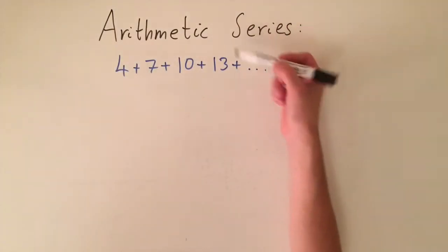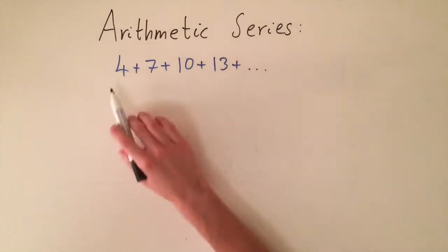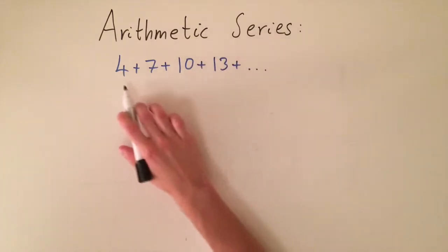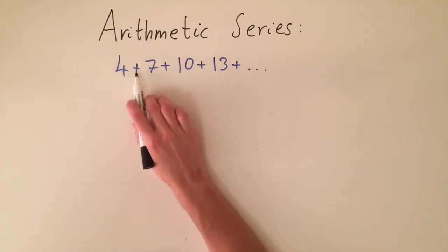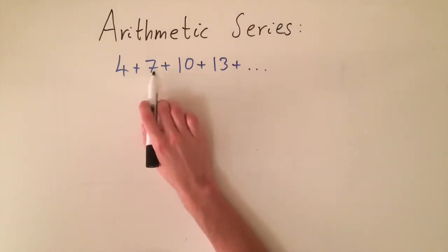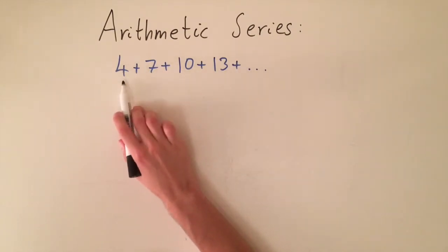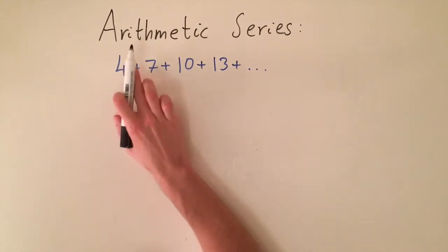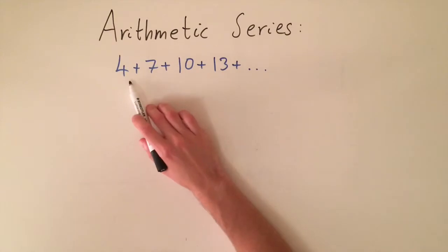This video is an introduction to series, and in particular arithmetic series. A series is just a sequence of numbers that we're adding together — each number is called a term. It's just like a sequence, but we're replacing the commas with pluses. It's arithmetic because the difference between the terms is constant — we're adding three to get to the next term: four, add three gives seven, add three gives ten, and so on.